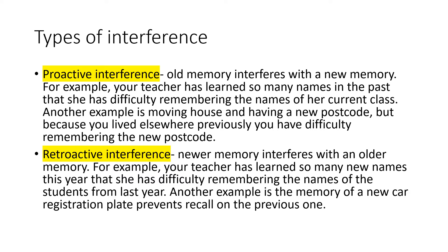Then because it's the opposite — new interferes with old — this is your retroactive interference. Your textbook talks about a teacher who has learned so many new names this year that she has difficulty remembering the names of students from last year. Another example: if you change cars and get a new registration plate, you remember that new one. But when you try and think back to your old number plate, you have difficulty remembering it because your new one interferes with your older one.